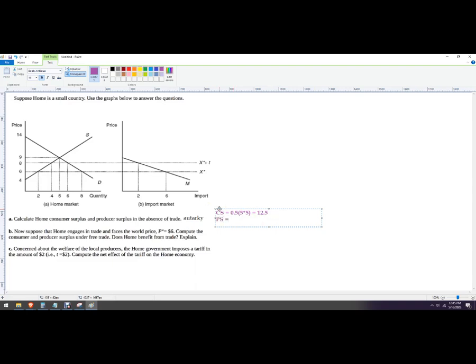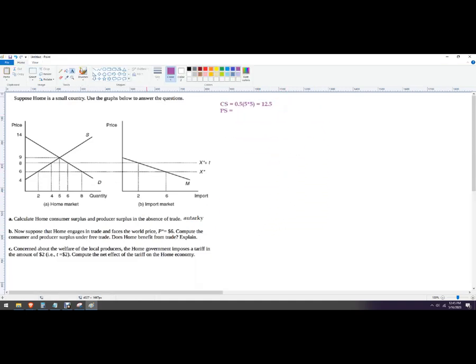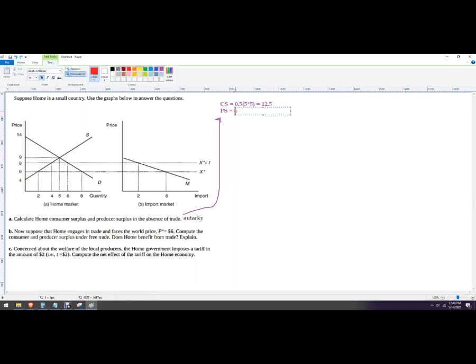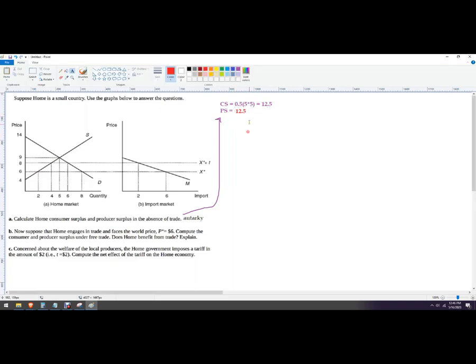And then the producer surplus under autarky is going to be the area. Let's put this up here. I'll just draw an arrow to it. And now for the producer surplus, we're going to start here. It's the area above the supply curve and then below the price. So right here. We don't really have to calculate because we can see we're going up five and over five and one half of that. So the producer surplus is also 12.5 rupees. If you wanted to write out and show your steps, it's just one half, five times five. So there's our consumer and producer surplus.